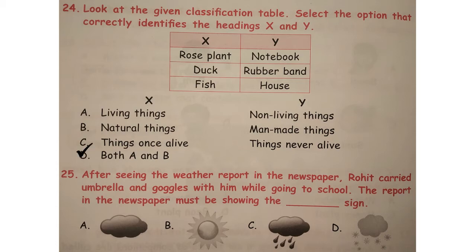Question number 25: after seeing the weather report in the newspaper, Rohit carried an umbrella and goggles with him while going to school. The report in the newspaper must be showing the dash sign. The correct answer is option B, because on a hot sunny day we carry an umbrella and goggles to protect ourselves.